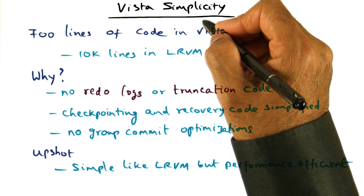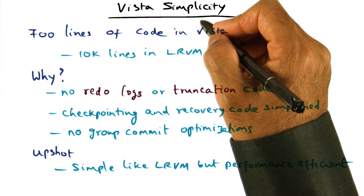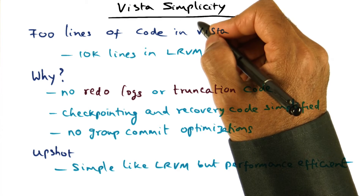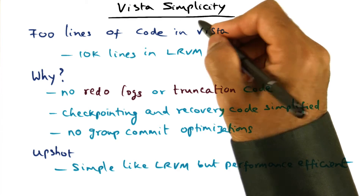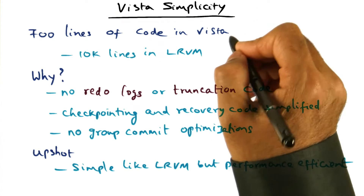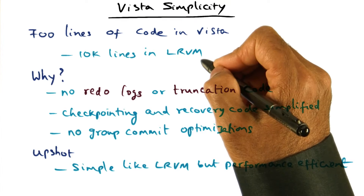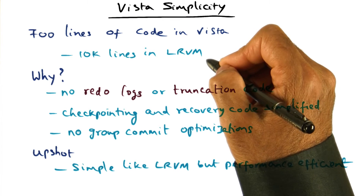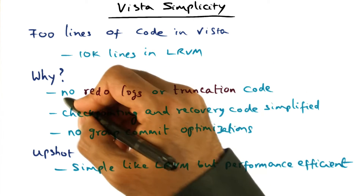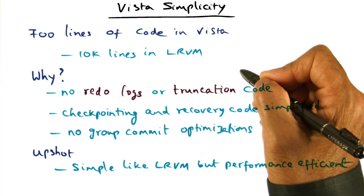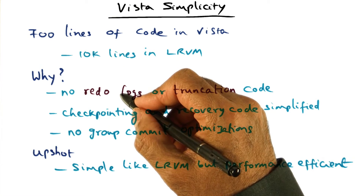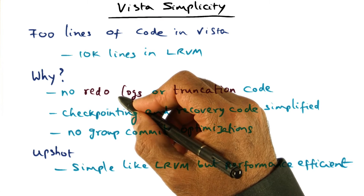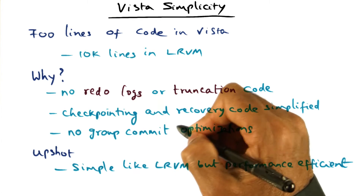Vista, by virtue of its simplicity, by making one of the problems go away — namely, the power failure — the implementation is very simple: 700 lines of code in Vista, as opposed to more than 10,000 lines of code in the original LRVM implementation. Why? Because there are no redo logs. All the changes we're making to virtual memory for persistent data structures directly get into the data segment, so no redo logs.